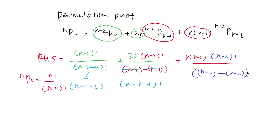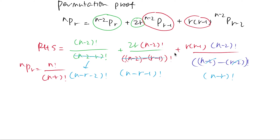And the last one: (n-2-2) terms cancel so it becomes (n-r) factorial. So everything is neat and tidy.